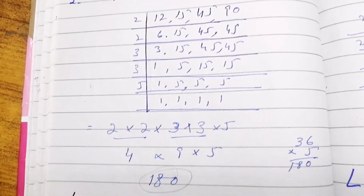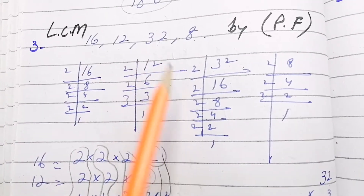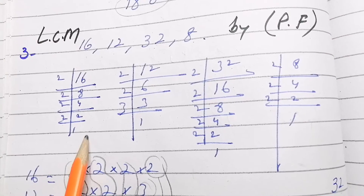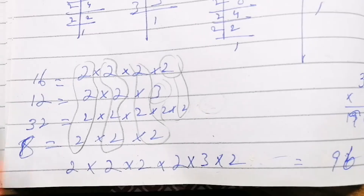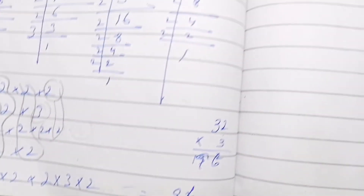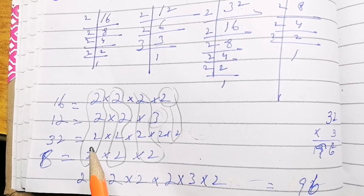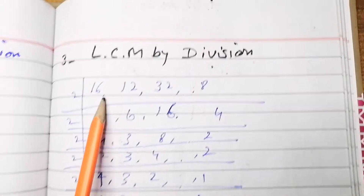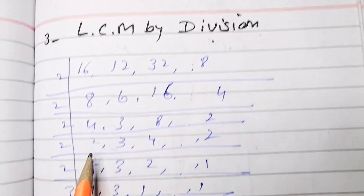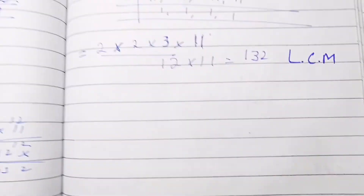For part 3, the numbers 16, 12, 32, and 8 are given. We take their prime factors, common factors, and non-common factors. The LCM is 96. If we solve the same question by division method — dividing 16, 12, 32, and 8 — the answer is also 96. So both methods give the same answer.